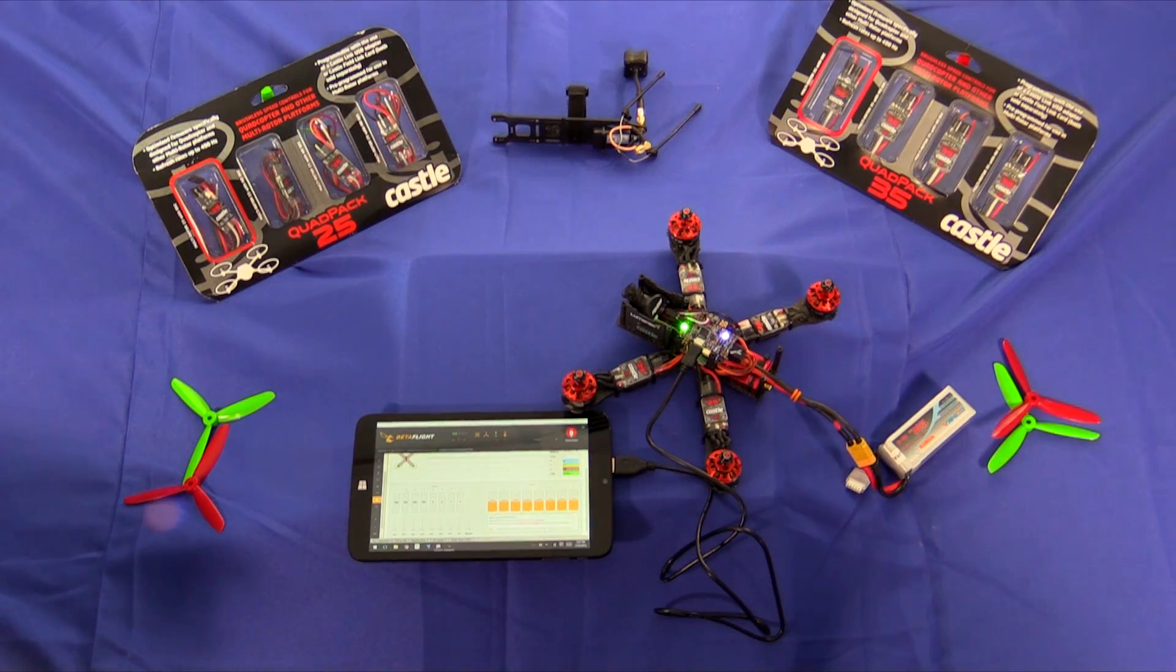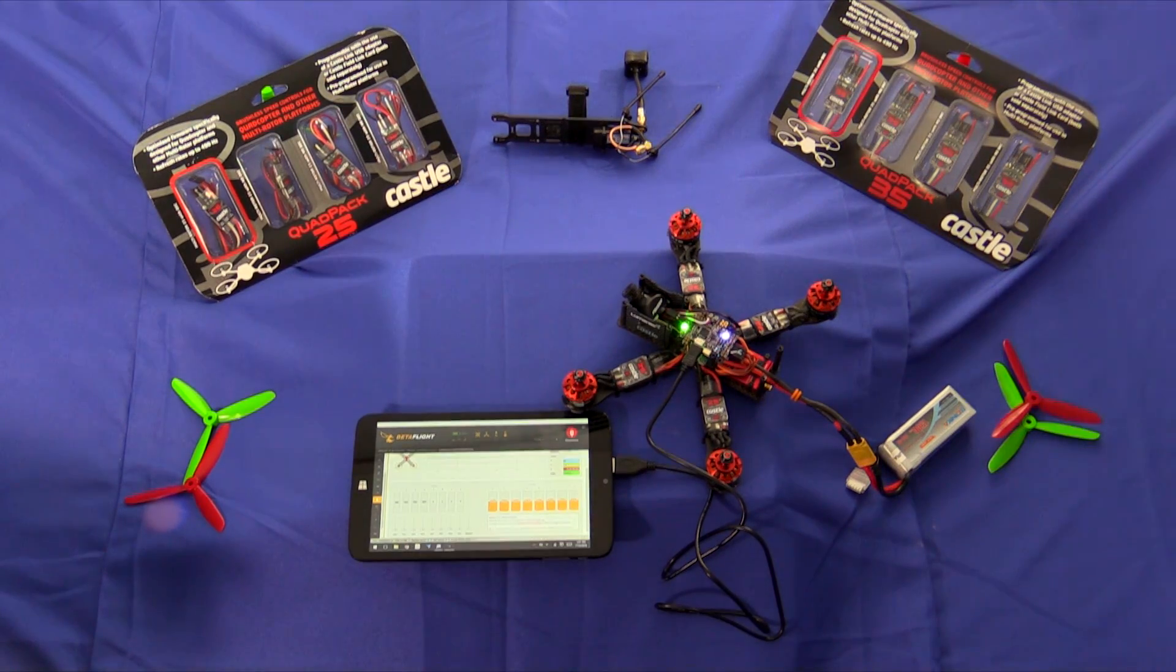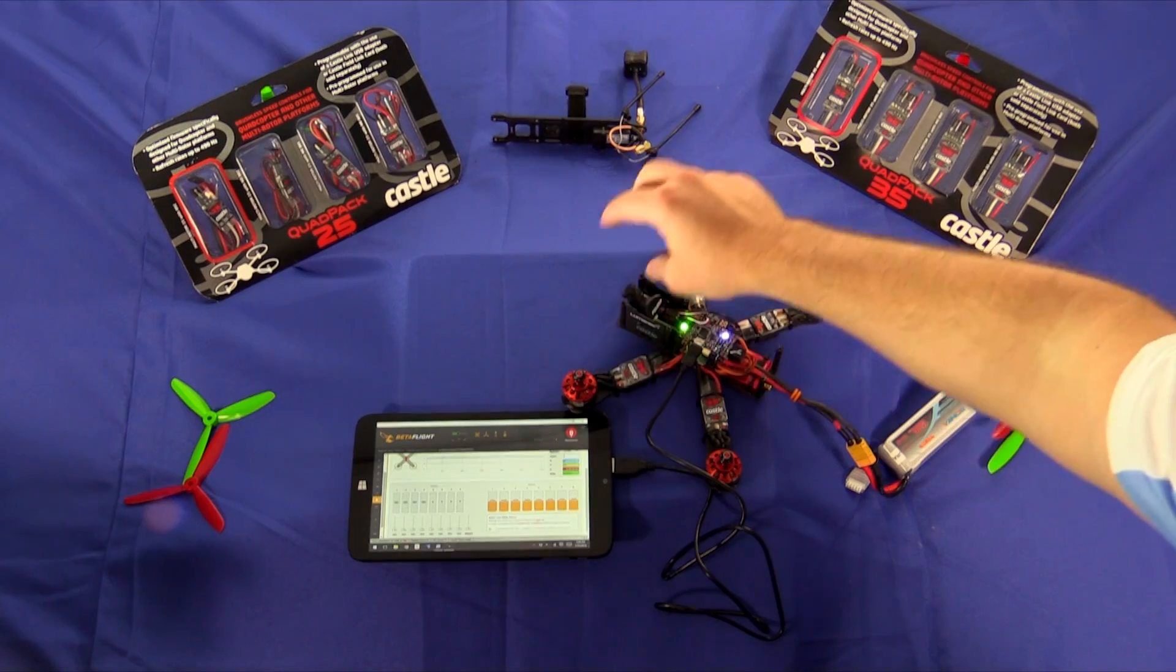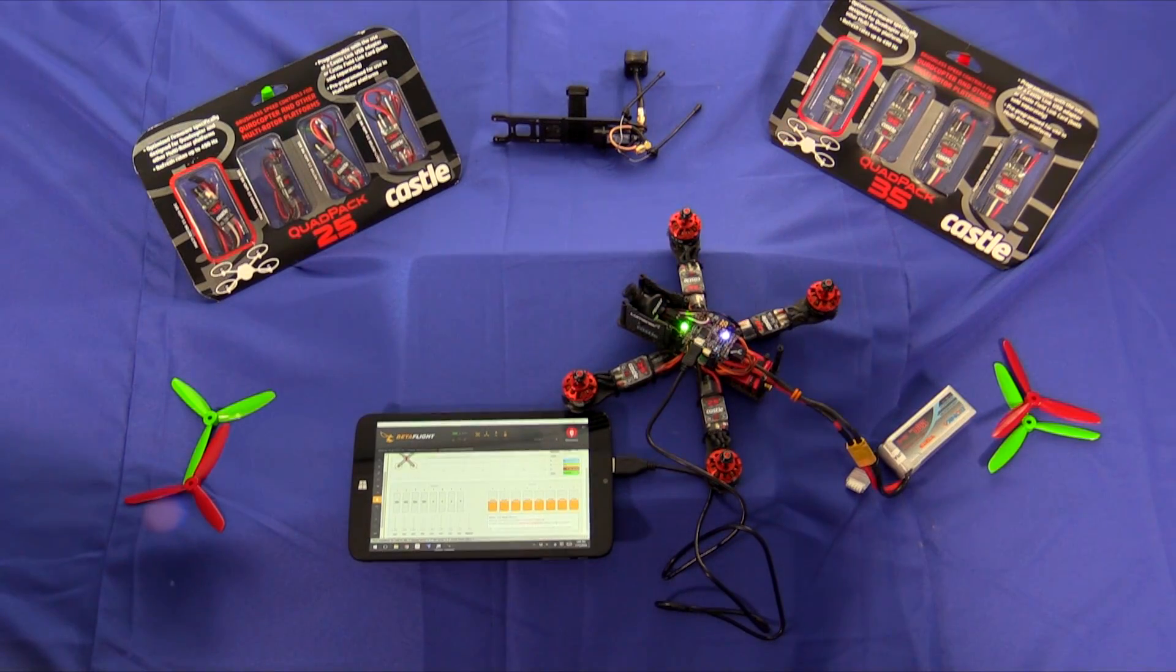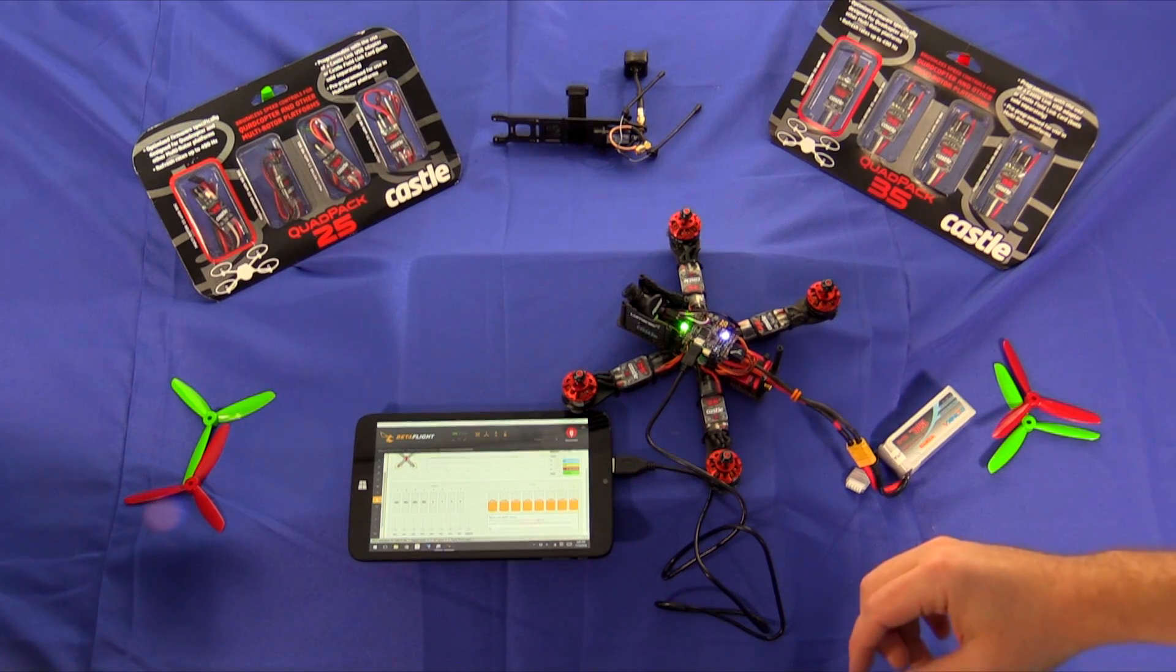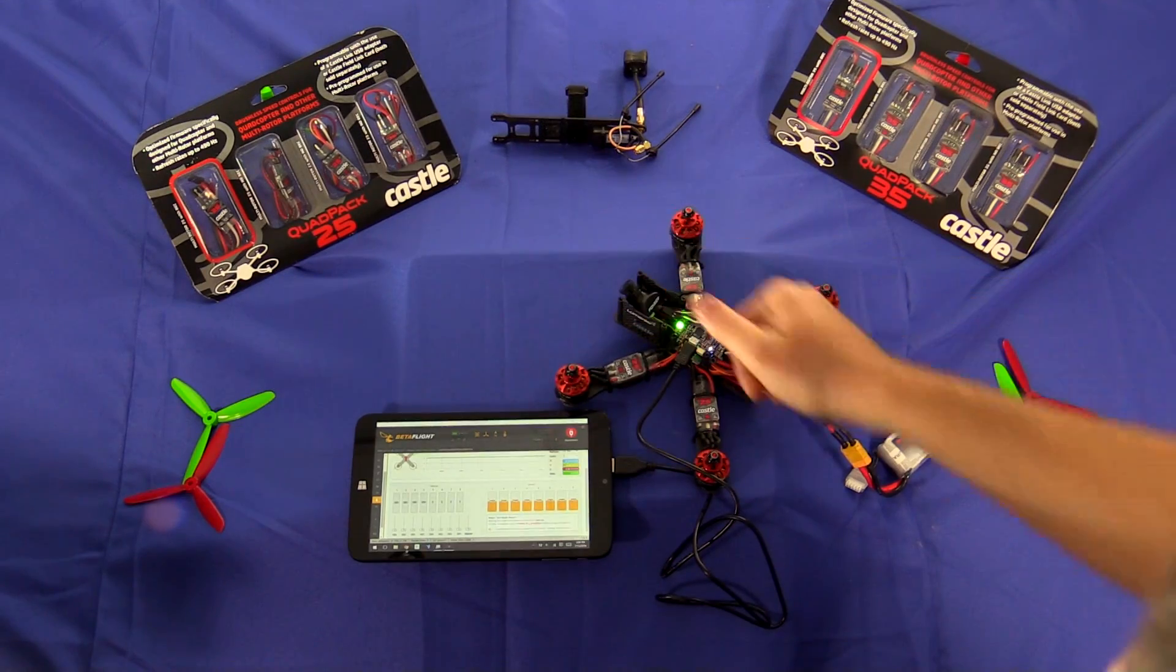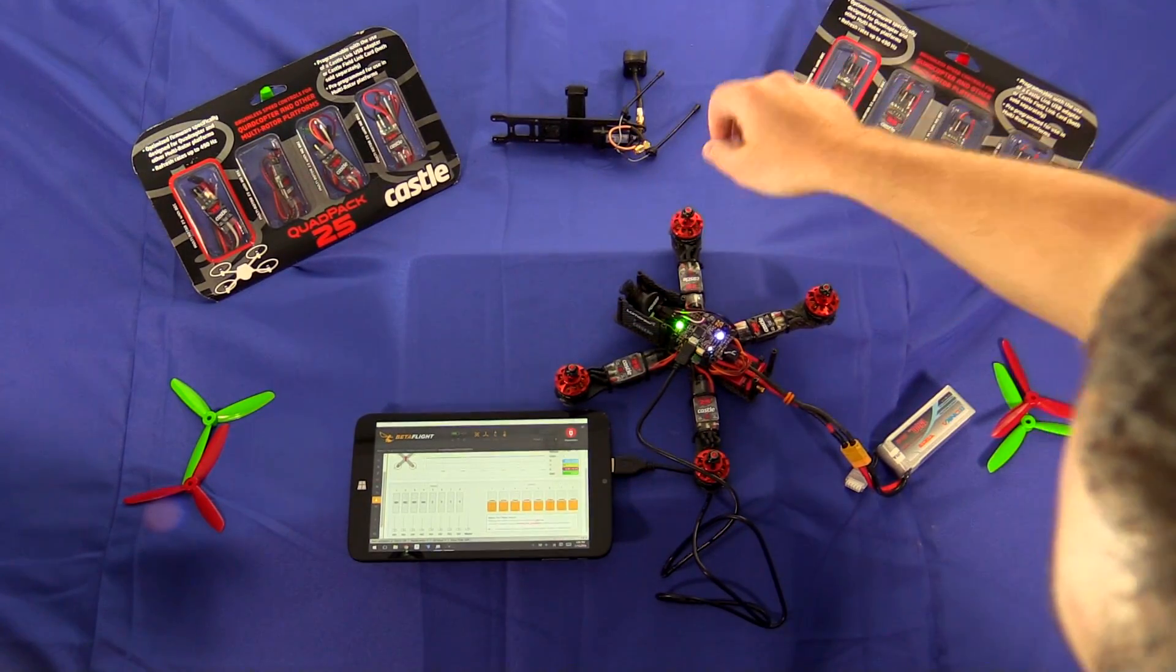Now at this point I could cycle the power but I also want to set the motor rotation. So it's already saved those endpoints but now I want to set the motor rotation. I didn't worry about how I wired up this quadcopter. I just did what was most convenient. So to set the rotation all I need to do is spin the motors in the direction I want them to spin during flight.